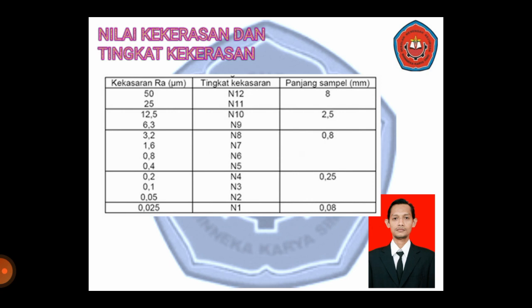Inilah nilai kekerasan dan tingkat kekerasan. Kekerasan itu dalam satuan mikrometer. Untuk N12 tingkat kekerasannya N12. Kalau seandainya Anda pakai N6, berarti panjang sampelnya adalah 0,8 dan kekerasannya adalah 0,8. Jadi sudah ada tabelnya, tinggal lihat. Saya membuat seperti ini, ketemunya seperti ini. Ini sederhana tapi perlu ketelitian dalam membaca, kemudian ketelitian dalam melaksanakan — misalnya Anda jadi operator, kemudian dikasih gambar seperti ini, harus tahu.